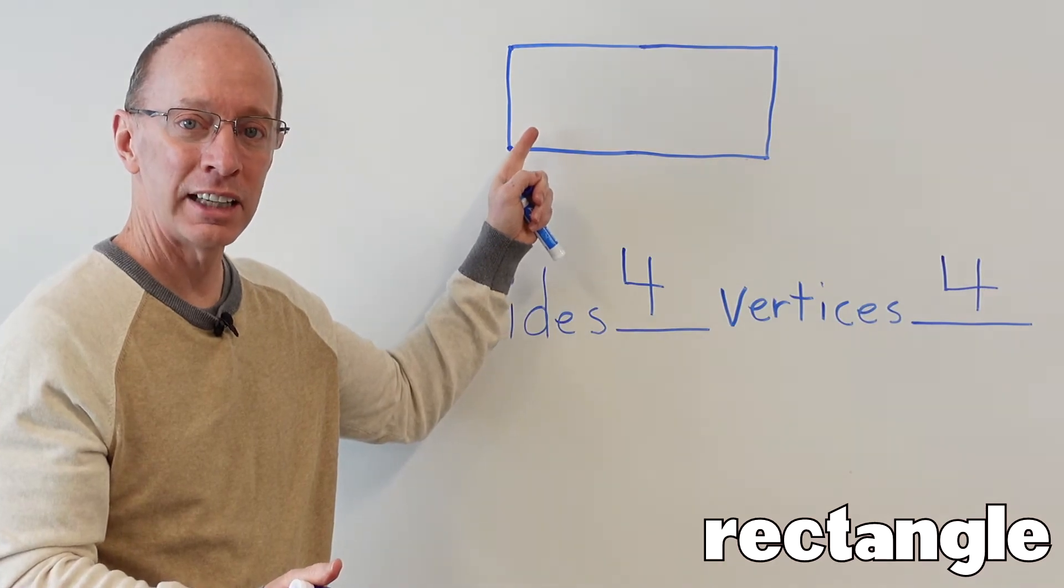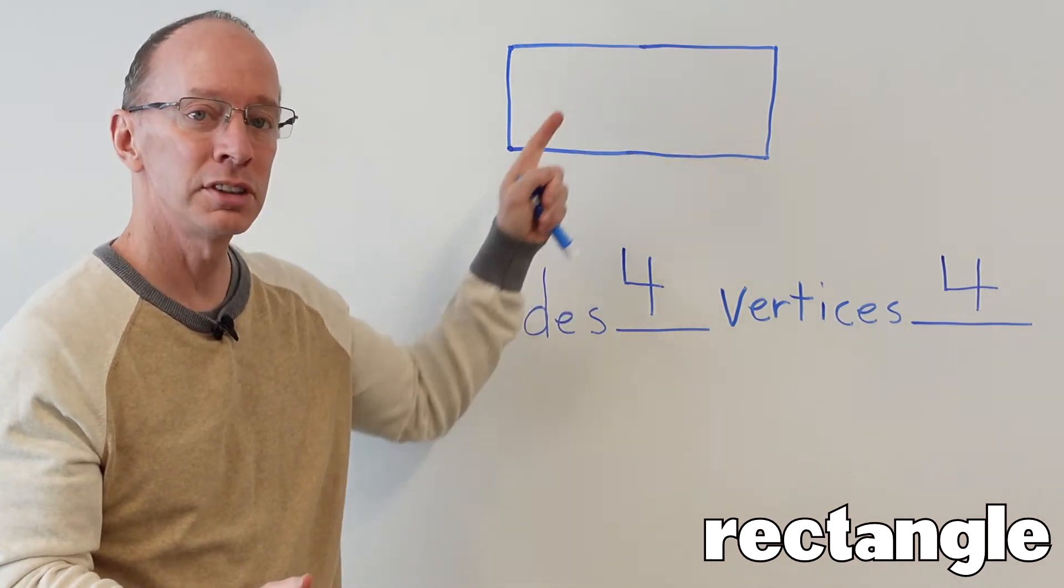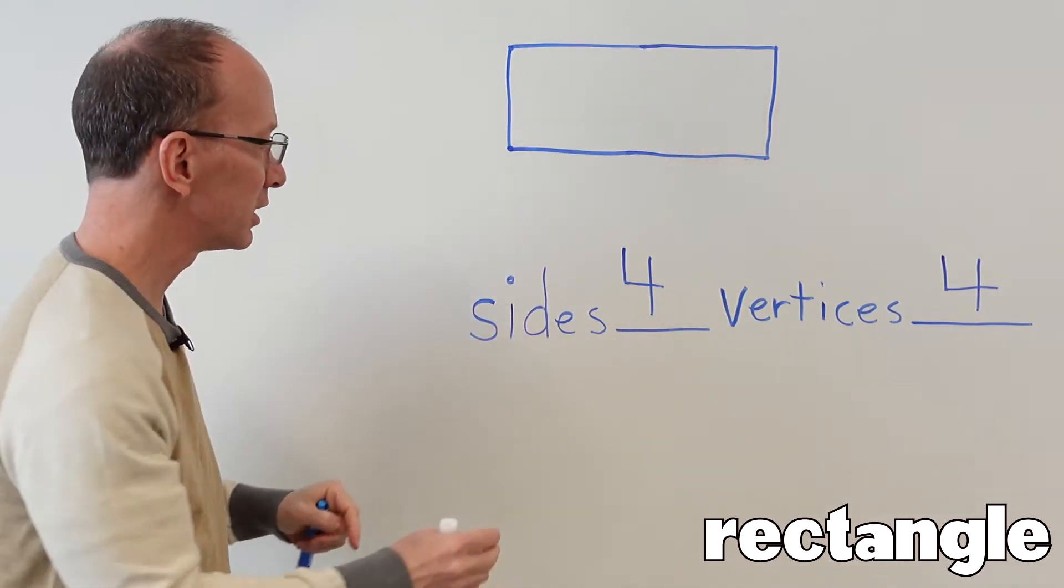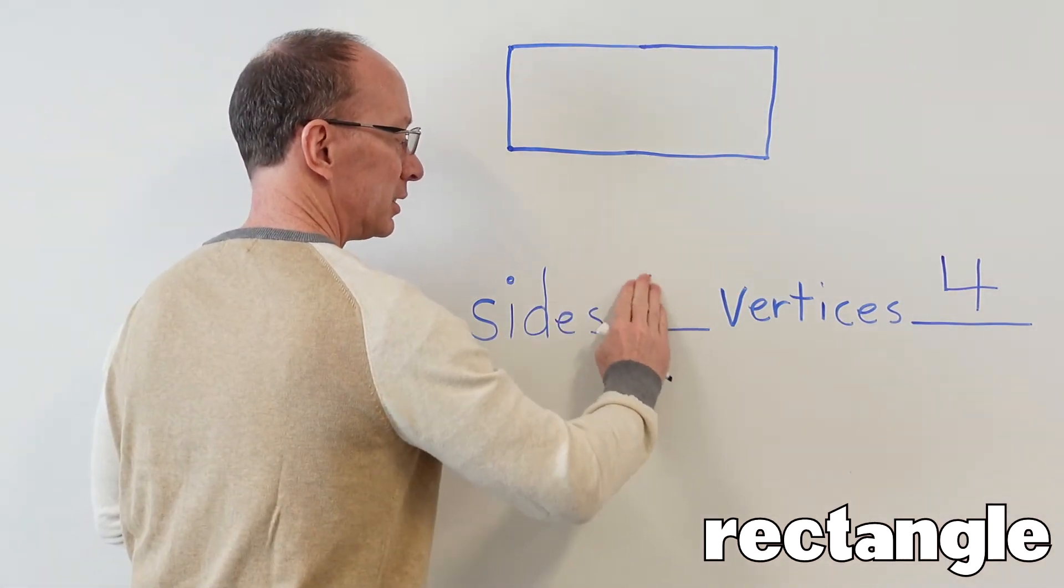A rectangle is longer on two sides. So let's count the sides here. I'm going to erase these right here.